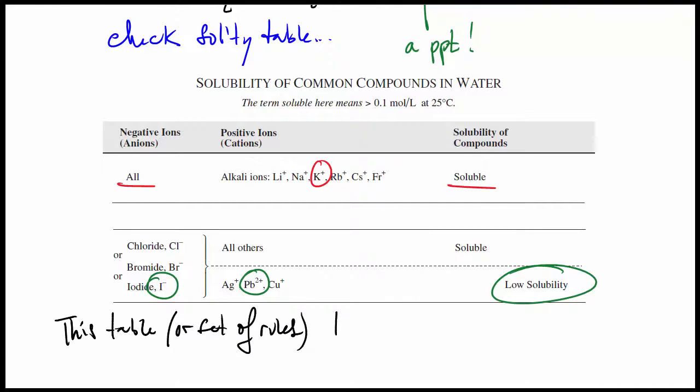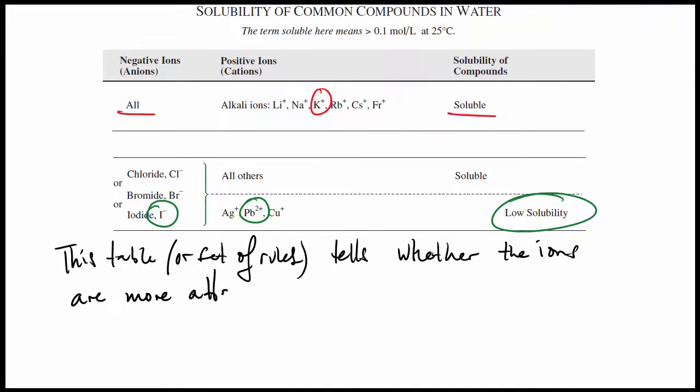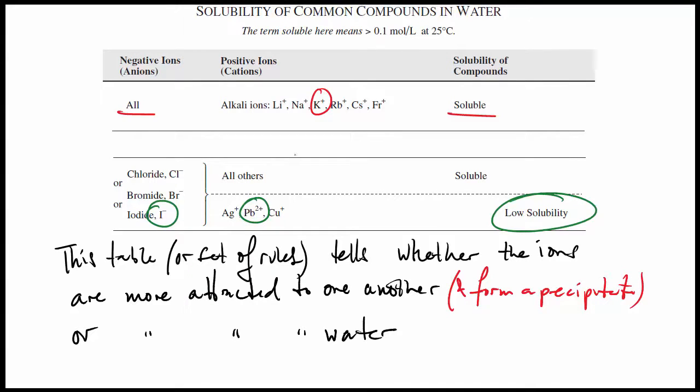This table or set of rules tells whether the ions are more attracted to one another, and therefore they form a precipitate, or whether they're more attracted to water, and stay in the solution as ions.